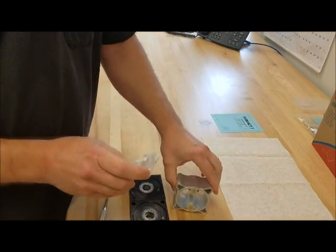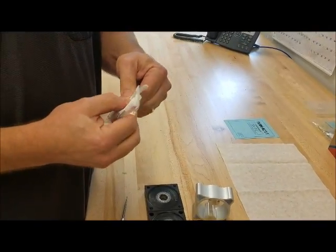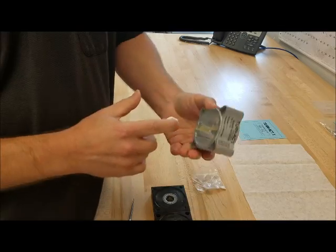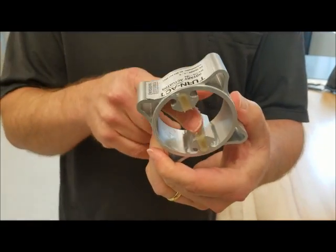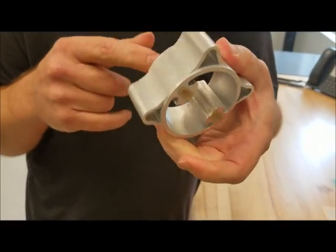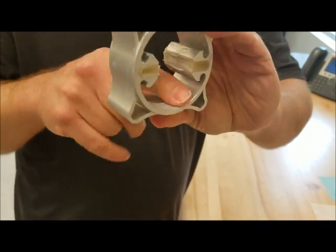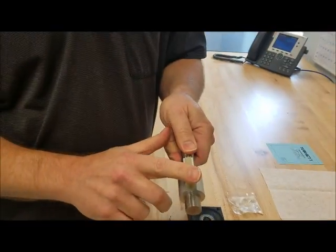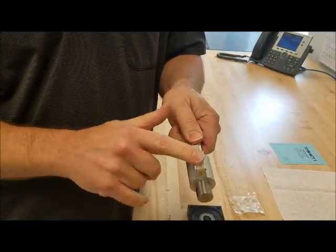Then what you do is you'll start greasing your tube and rotors so you can assemble them. Put some on the seals on the inside of the tube. Same thing with the rotor. You want to make sure you grease your seals good.